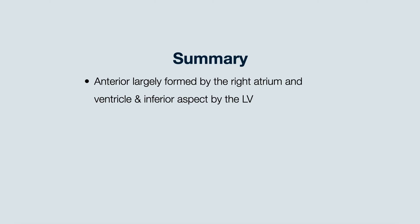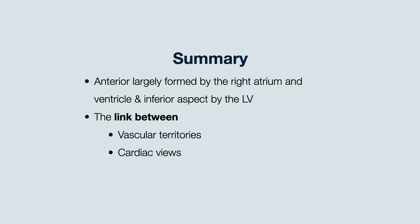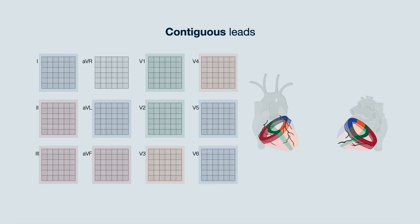In this video, you learned that the anterior heart is largely formed by the right ventricle, and the inferior aspect is largely formed by the left ventricle. We also reviewed the various vascular territories and how they link to the cardiac views. On ECG, we can assess specific views of vascular territories by looking at the contiguous leads. Therefore, abnormalities involving the lateral leads suggest injury of the left circumflex artery, the anterior septal leads suggest the left anterior descending artery, and the inferior leads suggest involvement of the right coronary artery.